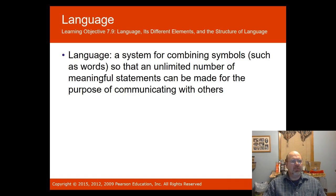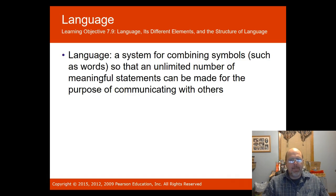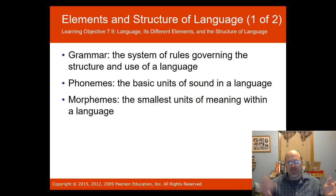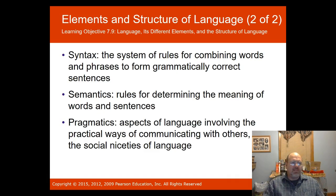Language is a system for combining symbols such as words so that an unlimited number of meaningful statements can be made for the purpose of communicating with others. Part of language involves grammar — a system of rules. Phonemes are the basic units of sound in language. Morphemes are small units of meaning within the language — for instance, the word 'playing' consists of two morphemes: 'play' plus 'ing.' Syntax is a system of rules for combining words and phrases to form grammatically correct sentences — 'John kidnapped the boy' is different from 'the boy was kidnapped by John.'